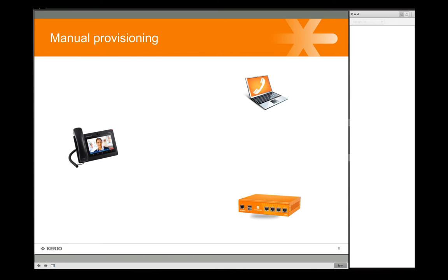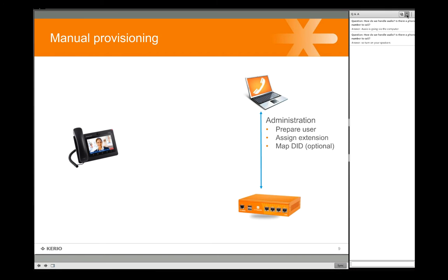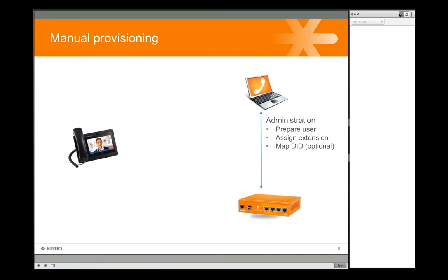You're not limited to automatic provisioning — you can also manually provision phones. In the scenario that the phone is remote or if you want a more advanced type of configuration, you might choose to provision manually. The administrator first goes into Operator, prepares an extension, assigns a user, and then optionally maps a DID. If you want to dedicate a specific phone number to a specific extension, you can do that — that's the direct inward dial or DID.